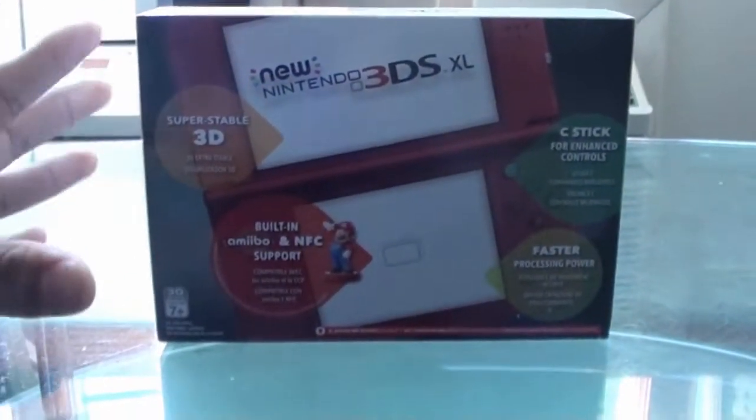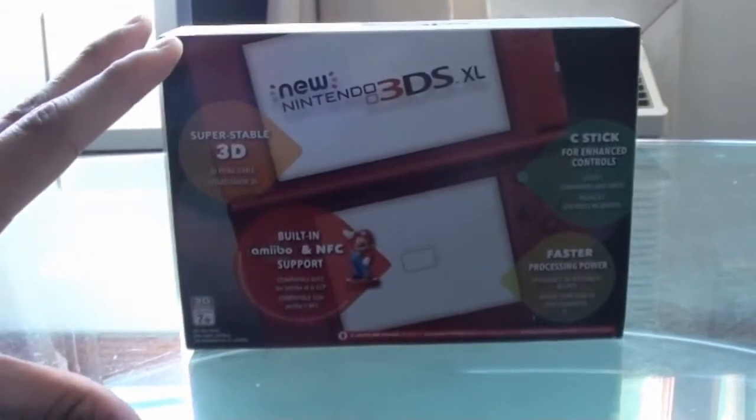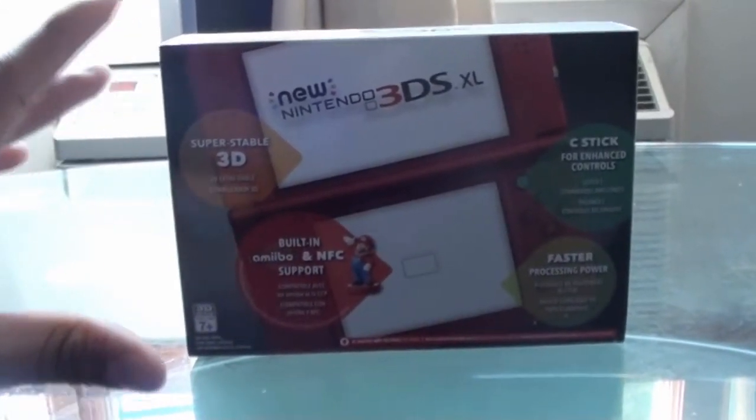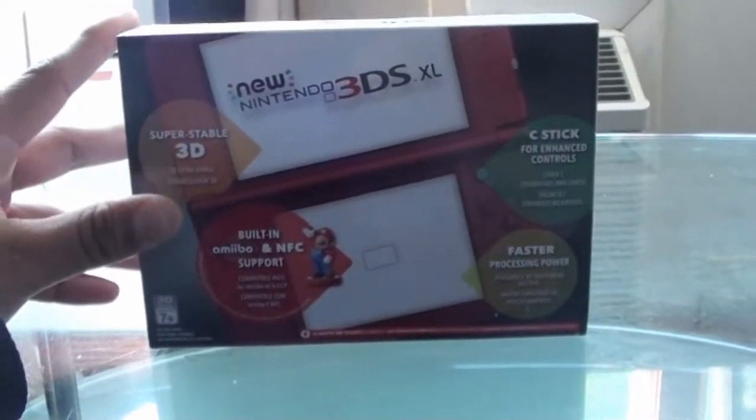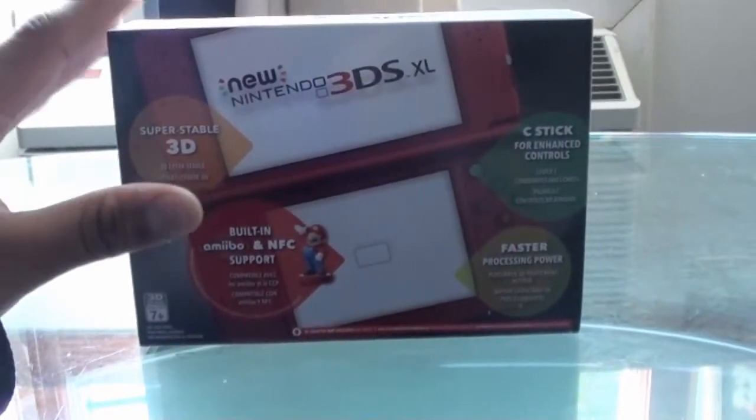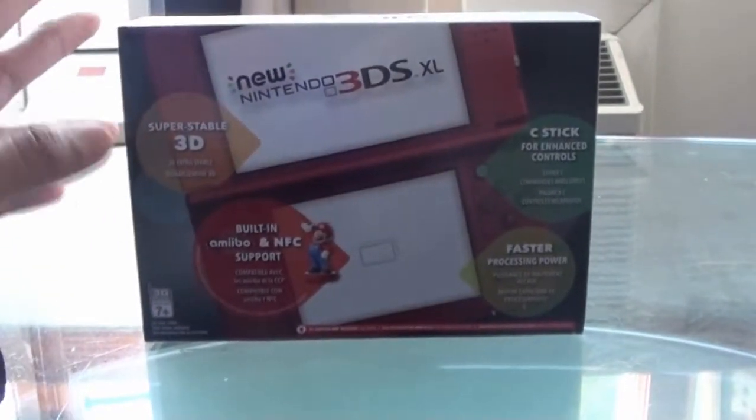Alright, so the new Nintendo 3DS XL comes with these new features: Super Stable 3D. Now what that means is that in the original 3DS and the 3DS XL, the 3D works when you're looking in front of the screen, but let's say you're moving left to right for whatever reason, and the 3D effect is sort of gone.